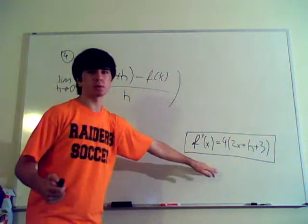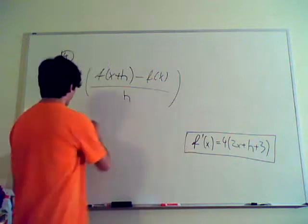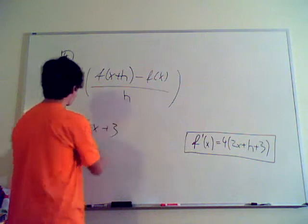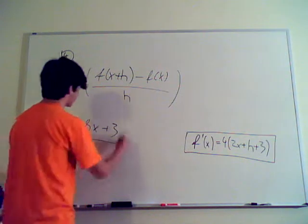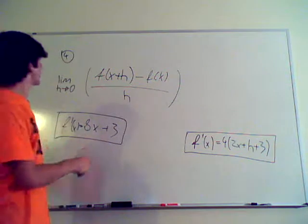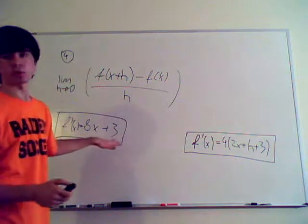And here, if you plug in 0 into h, nothing happens, right? So, if you plug in 0 into h, you get 8x plus 3 f prime of x. All right? That's your derivative. That is the rate of the function, or whatever. That is your derivative. There's no more h of h.